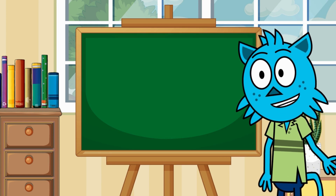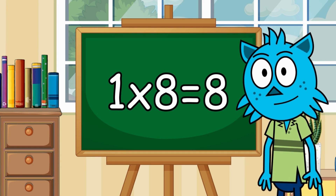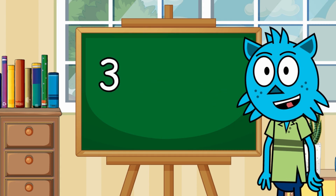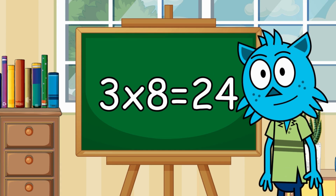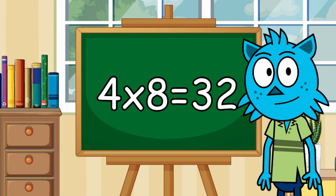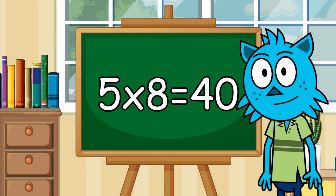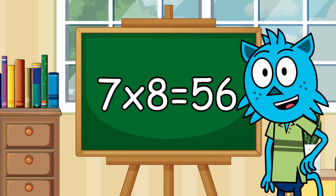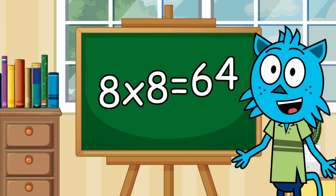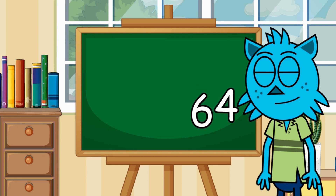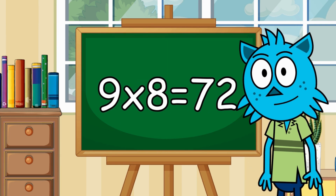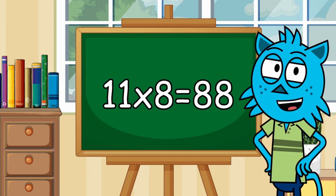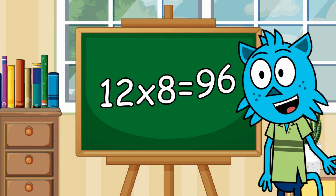Ready? Repeat after me. One times eight is eight. Two times eight is sixteen. Three times eight is twenty-four. Four times eight is thirty-two. Five times eight is forty. Six times eight is forty-eight. Seven times eight is fifty-six. Eight times eight is sixty-four. Nine times eight is seventy-two. Ten times eight is eighty. Eleven times eight is eighty-eight. Twelve times eight is ninety-six.